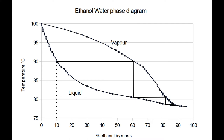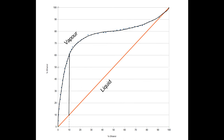Another way of displaying these data is to use the McCabe-Thiele type plot, where the alcohol proportion in the liquid phase is shown as a straight line, and the corresponding alcohol proportion in the vapour phase is shown as the curve. We can then add in the same fractional distillation steps.